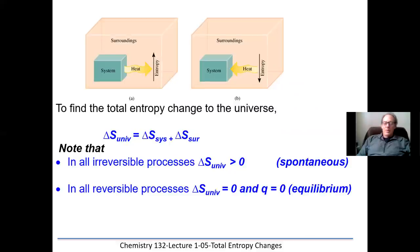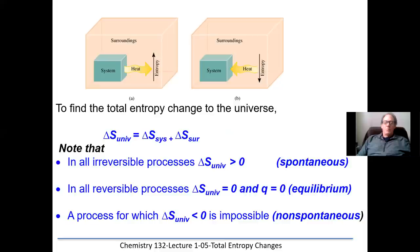If you don't have a positive entropy change, the reaction can never be spontaneous. So all spontaneous processes will have entropy changes to the universe greater than zero. All reversible processes — which happen very, very slowly — have an entropy change equal to zero. Keep in mind, reversible changes are theoretical. A process for which delta S of the universe is less than zero will never happen spontaneously — those will always be non-spontaneous events. We can use the change in delta S to determine whether a process is spontaneous, at equilibrium, or non-spontaneous.